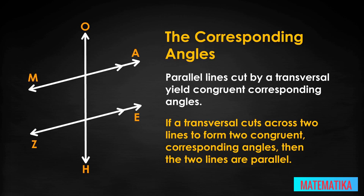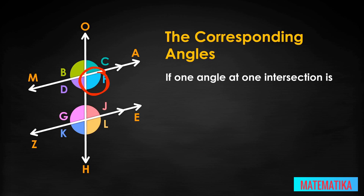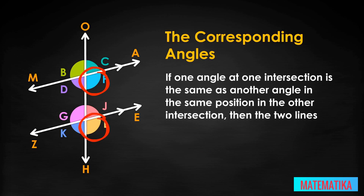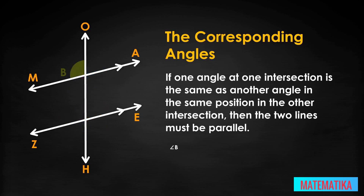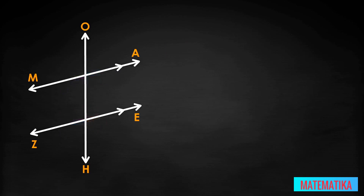Transversal OH sliced through lines MA and ZE, leaving behind eight angles. Each slicing created an intersection. If one angle at an intersection is the same as another angle in the same position in the other intersection, then the two lines must be parallel. Two angles are corresponding if they are in matching positions in both intersections. The corresponding angles are angle B and angle G, angle C and angle J, angle F and angle L, angle D and angle K. If you check only a single pair of corresponding angles and they are equal, then the two lines are parallel.